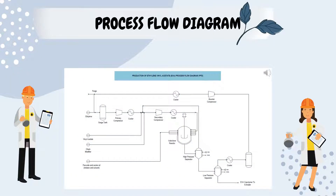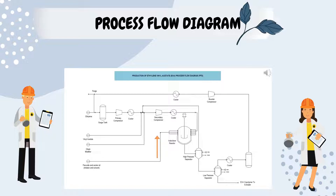This is the process flow diagram of the EVA production process. First, ethylene, vinyl acetate, and chain modifier feed streams are mixed at the suction of the secondary compressor and sent to the autoclave reactor, where the copolymerization process takes place. Free radical initiators are injected continuously into each reactor zone to control the exothermic polymerization reaction.